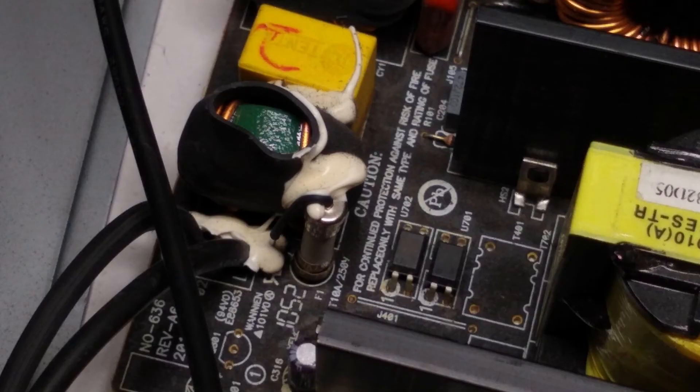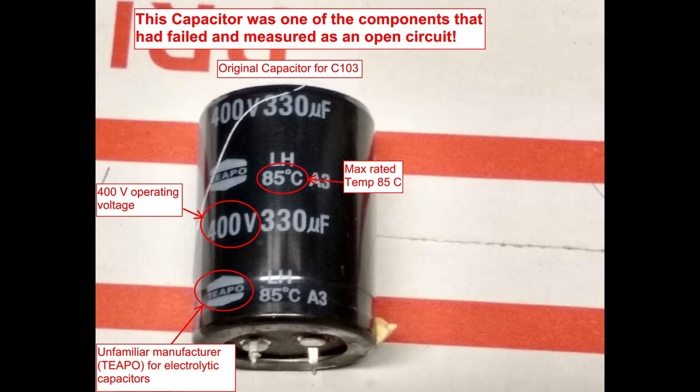This next part of the video shows what I did to get the power supply working again. I then proceeded by procuring the TNY278P IC off eBay with free shipping. I didn't want to buy a replacement for the 330uF capacitor until I was sure there was nothing else wrong with the power supply.